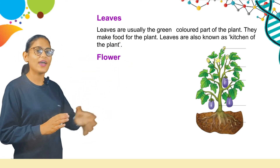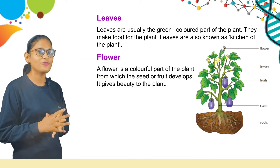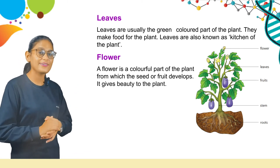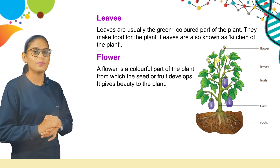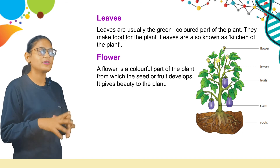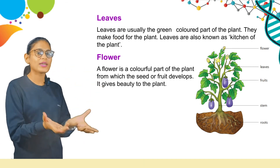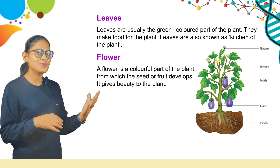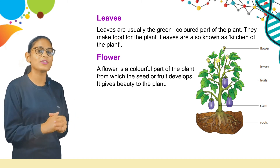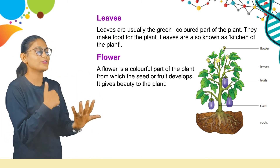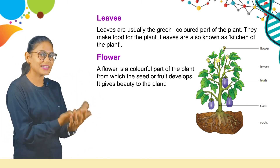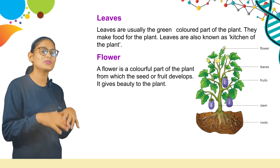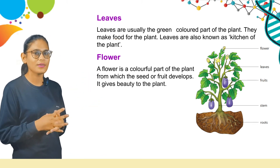Now, flower. A flower is a colorful part of the plant from which the seed or fruit develops. It gives beauty to the plant. Students, a flower is a colorful part, and from it we get either a seed — which helps us grow the plant again — or a fruit.